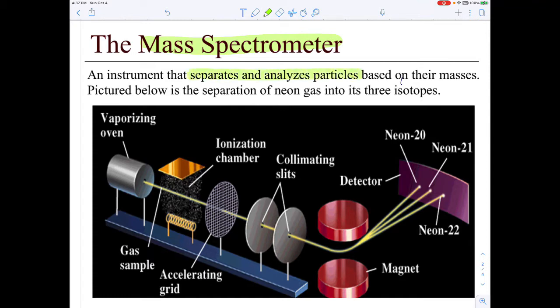What it does, this is what you need to know about it, is that it can separate and analyze particles based on their masses. In other words, it can separate a sample of a given element, in this case neon gas, into its isotopes.